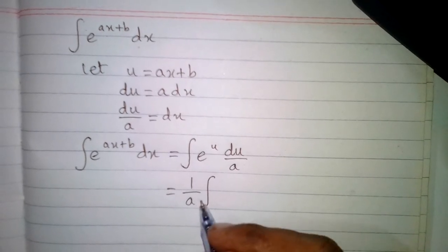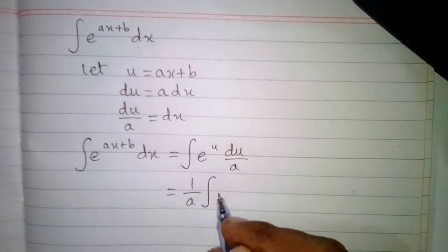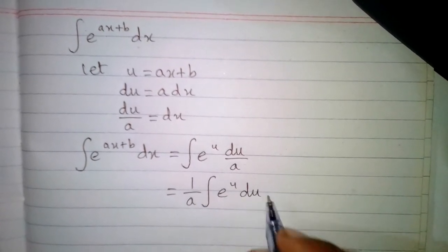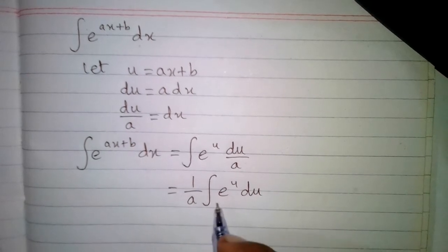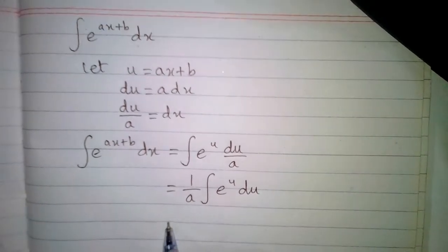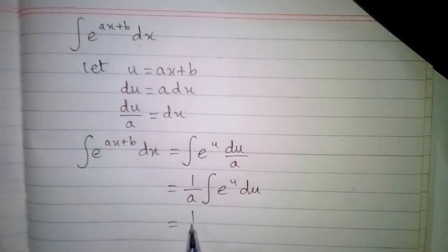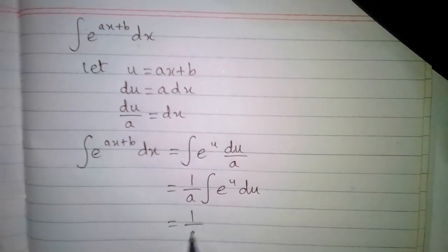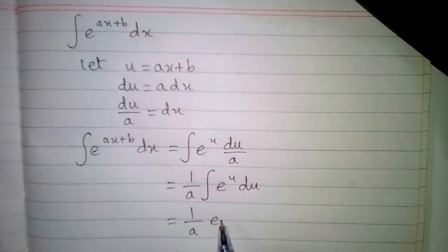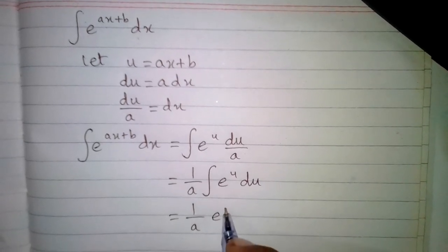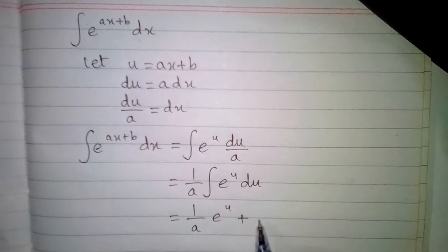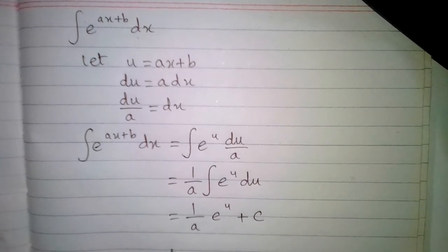Now we write this as 1 upon a in front of the integral, so we have 1 upon a times e to the power u du. We know that the integral of e to the power u is e to the power u plus c, so we have 1 upon a times e to the power u plus c, where c is the constant.